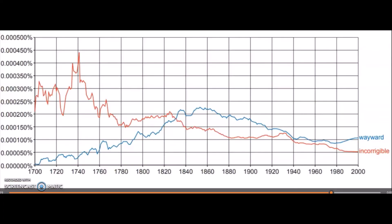From May/June 2022, the graph shows a higher frequency for 'wayward' compared to 'incorrigible' over the period from 1700 to 2000. Though 'incorrigible' was used more in the past, the graph data indicates a decline in its usage and a relatively higher frequency for 'wayward' as a more acceptable and commonly used term. The concept of behavior associated with being 'wayward' — implying deviation from expected or conventional behavior — has remained relevant throughout the centuries.